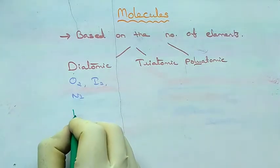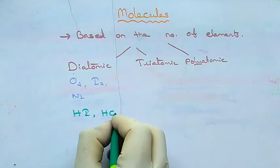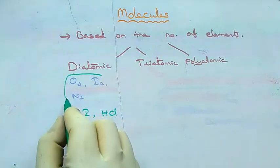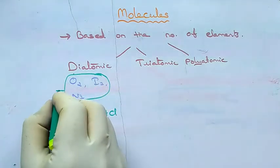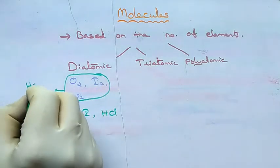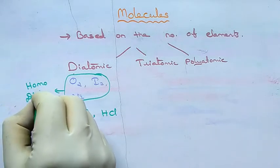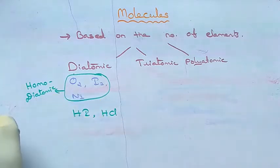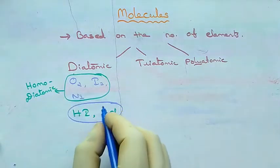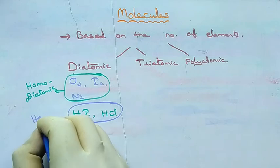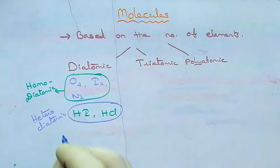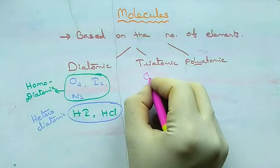For diatomic molecules: oxygen, iodine, and nitrogen are examples of homoatomic diatomic molecules, while HI and HCl are examples of heteroatomic diatomic molecules. In all these five molecules there are only two atoms, which is why they are called diatomic. The first three are homo-diatomic because there is only one type of element, while HI and HCl are hetero-diatomic because they contain two different elements.